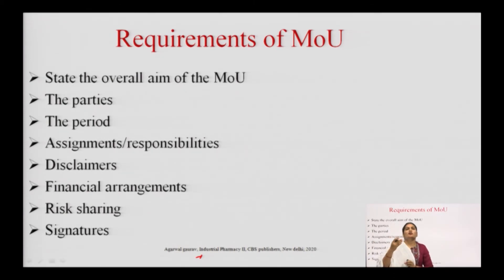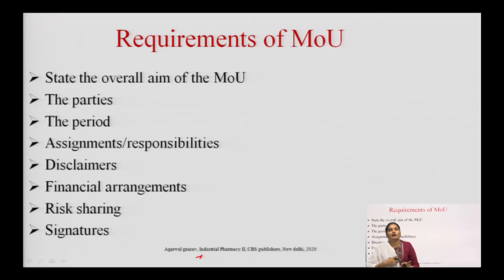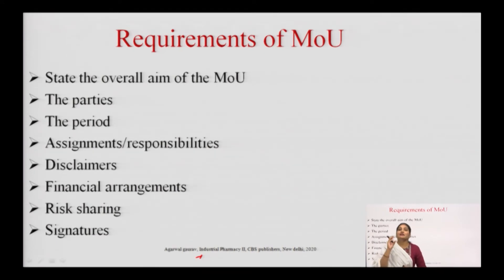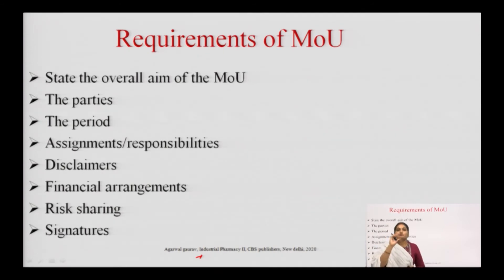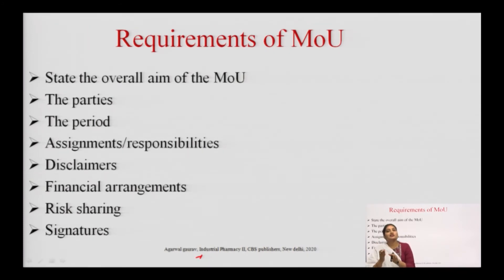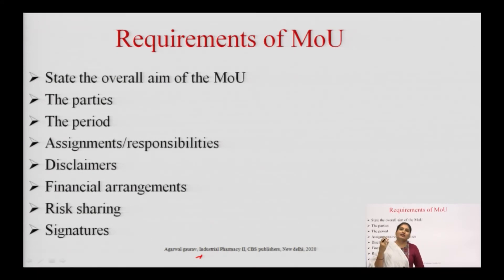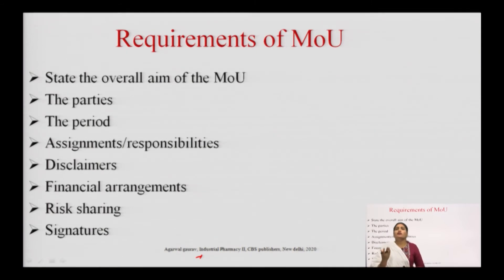Fifth, disclaimer: it consists of declarations or other relevant information. Sixth, financial agreements: on which terms and conditions this MOU is placed, the price, and the financial collaboration. Seventh, risk sharing: both parties should describe how they will share the risk — what will be the proportion of benefits or losses shared among them, whether the assessment will be mutual, and what the ratio of risk sharing will be, for example 3:2 or 1:1.